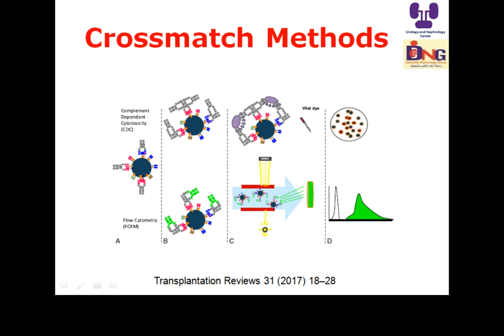Regarding cross-match methods: cells specific to a single potential donor are mixed with recipient serum. If donor-specific antibodies are present, they will bind to the cells. Two approaches exist: complement-dependent cytotoxicity (CDC) and flow cytometry cross-match. In cell-based assays, both CDC and flow cytometry depend on donor lymphocytes, and patient serum is added. Anti-human globulin (AHG) may be added to enhance the CDC reaction, and fluorescent conjugated anti-human IgG is added in the flow cytometry method.